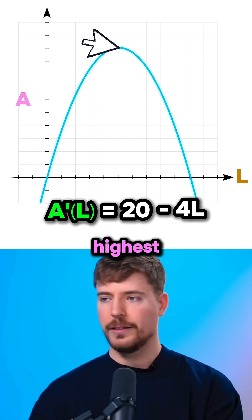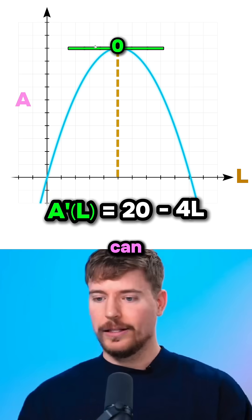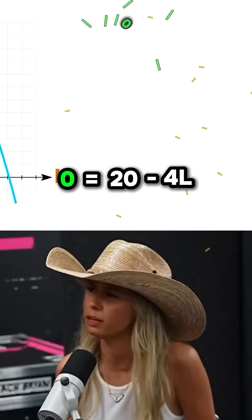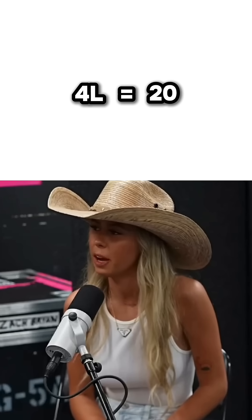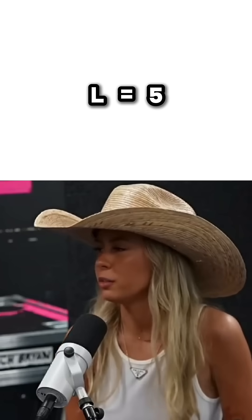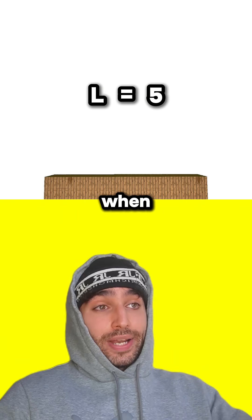Okay, now to find the value of L at this highest point, where the derivative is zero, we can set the derivative to zero and solve for L. Zero equals 20 minus 4L, so 4L equals 20, L equals 5.